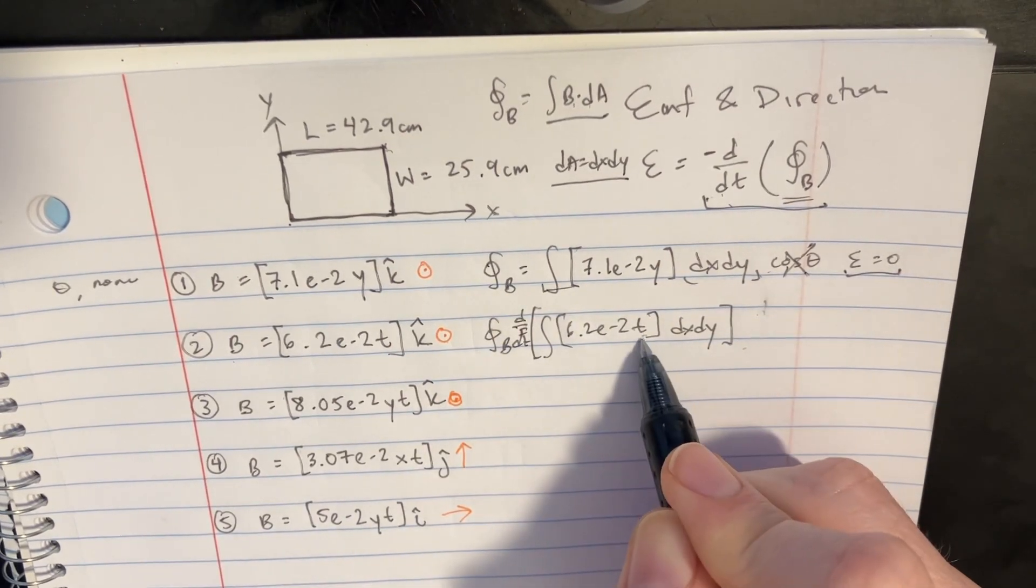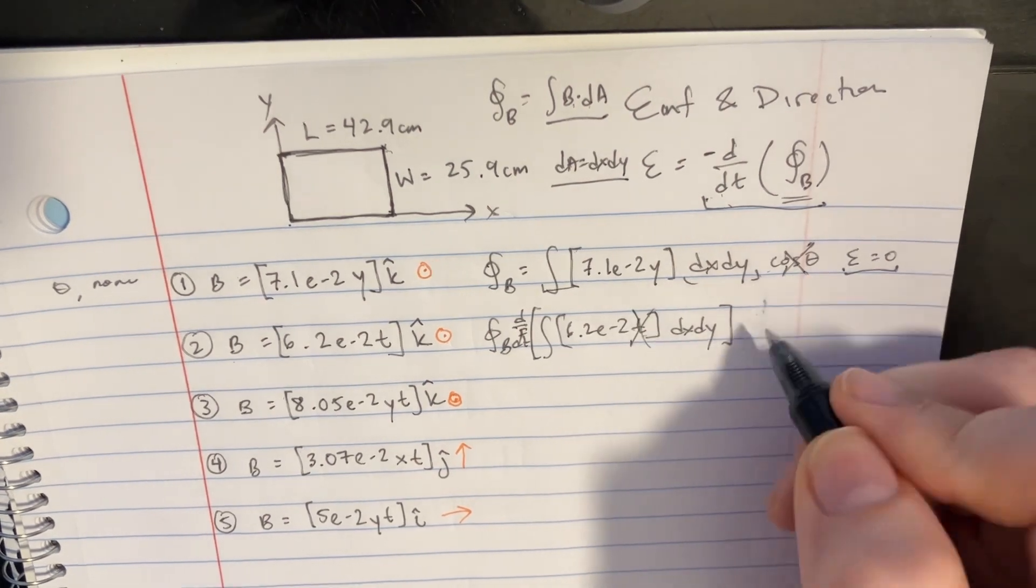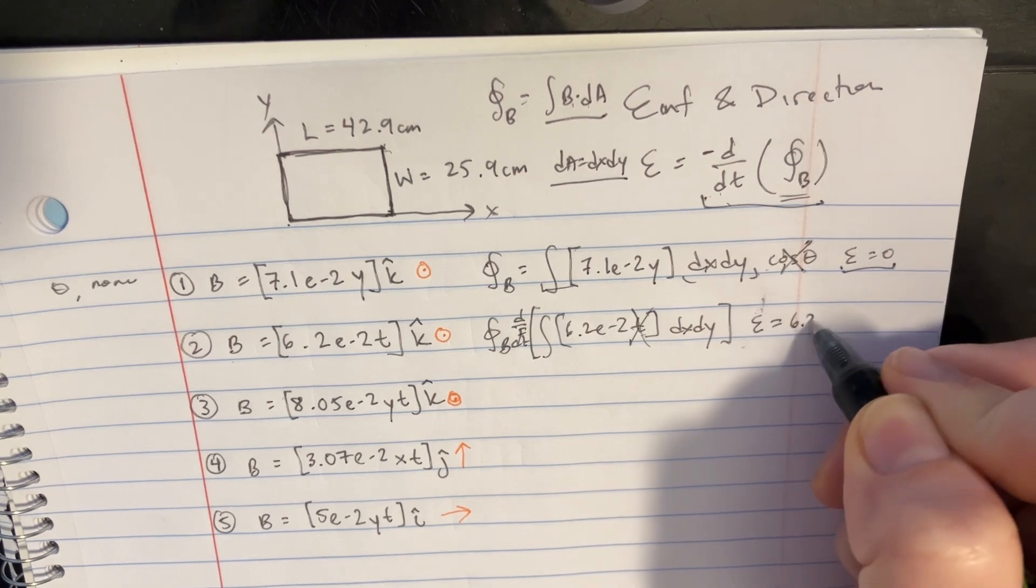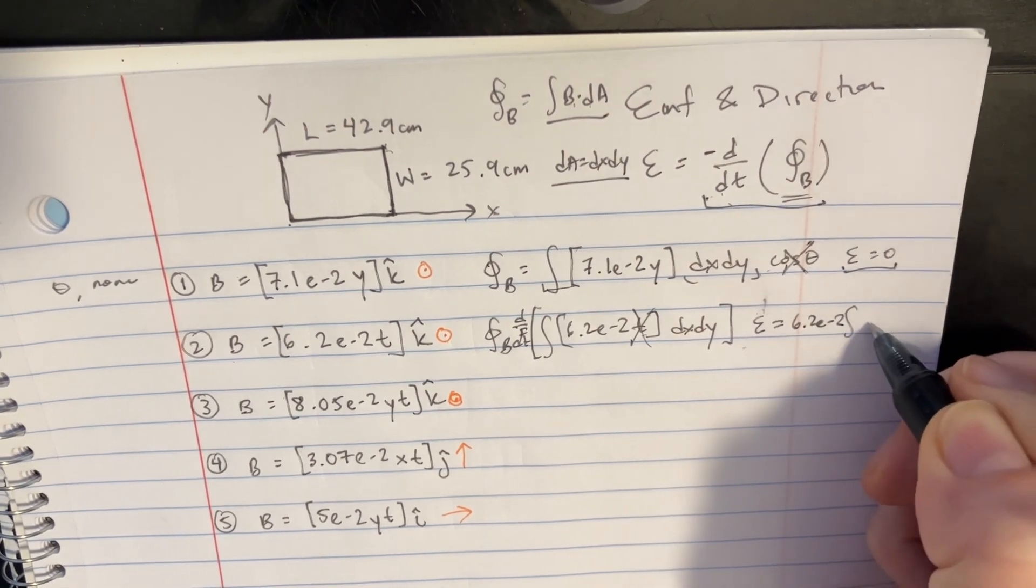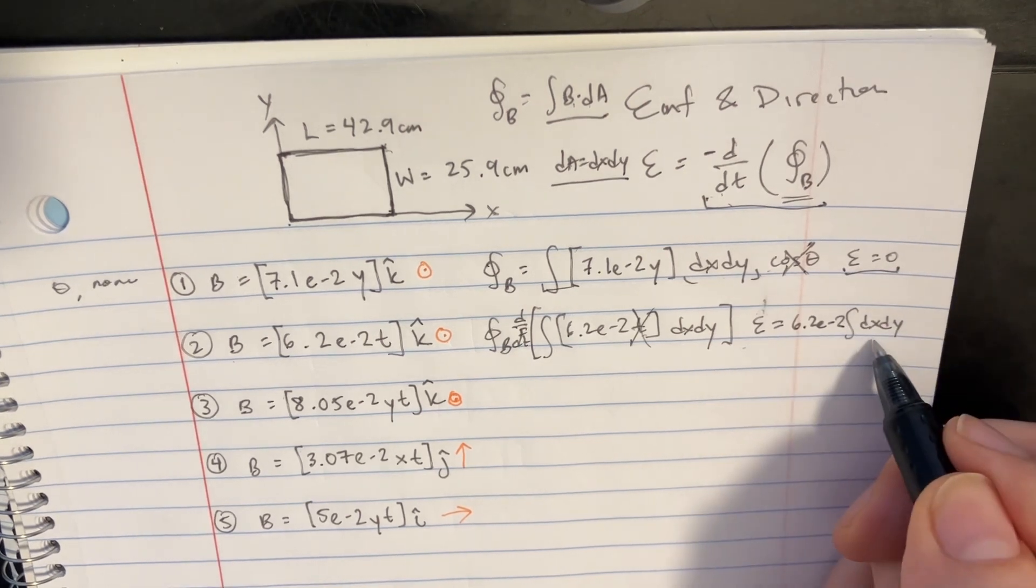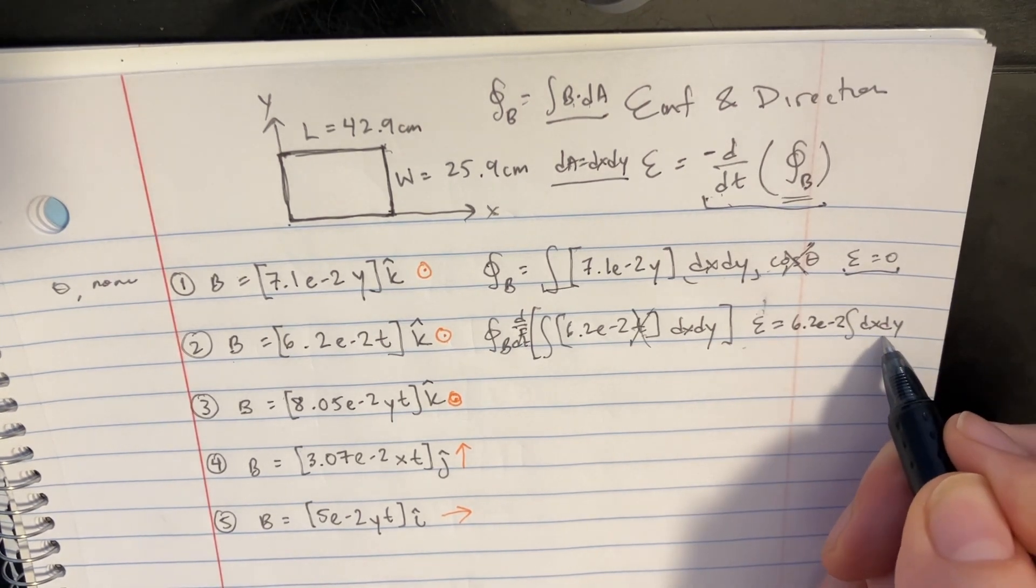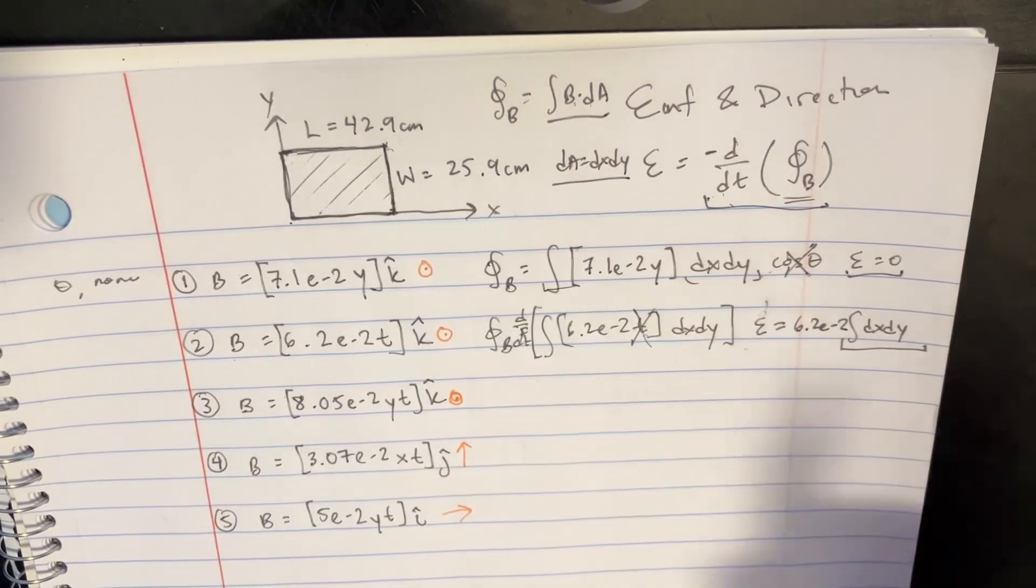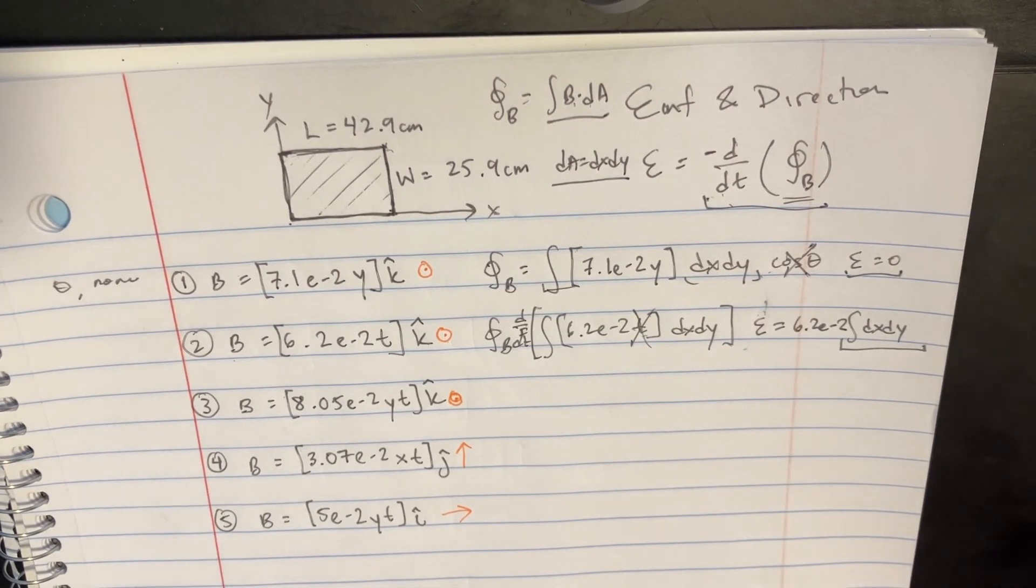And then we can essentially just drop this t. So the EMF is going to be the answer to this integral, which would be 6.2e to negative 2 integral of dx dy, which is technically a double integral. But if you just integrate that, it's just the area here. So let's try to do that real quick.